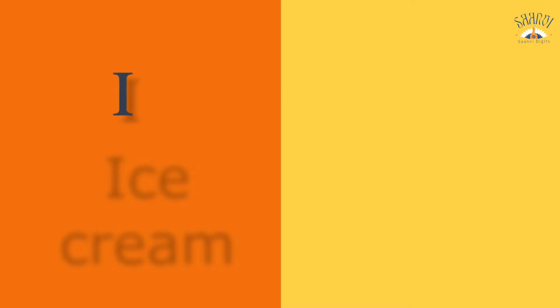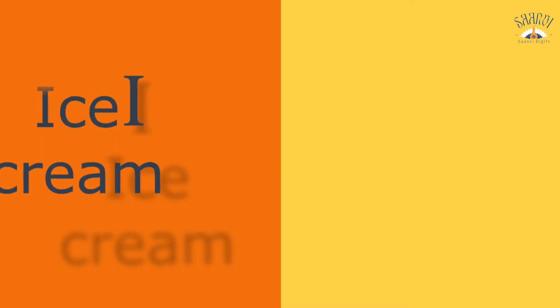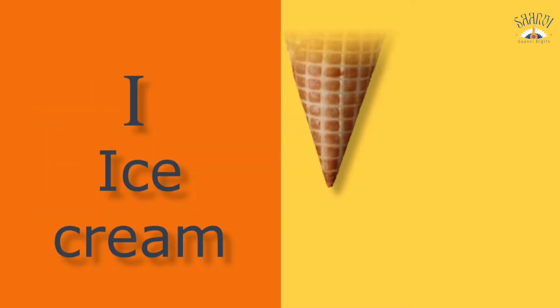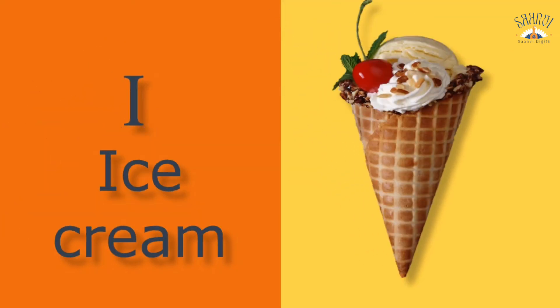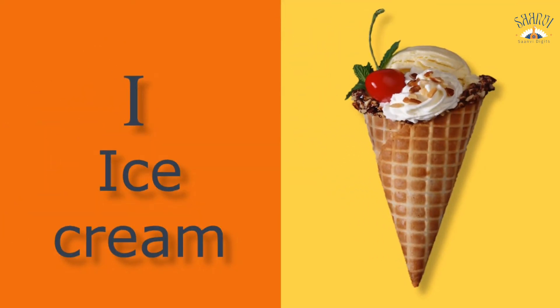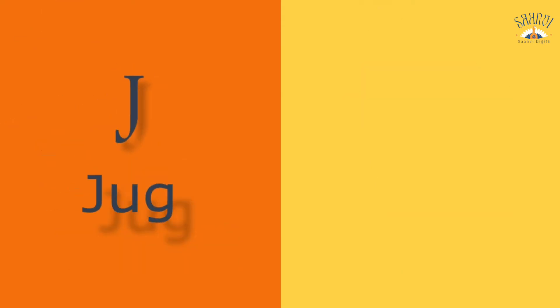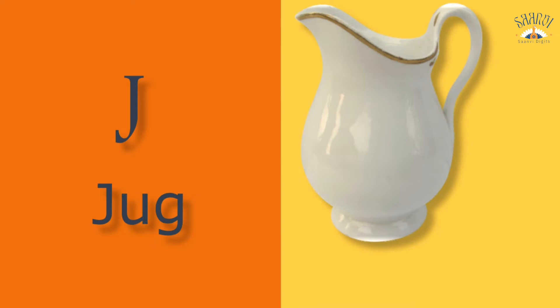I for ice cream. Ice cream means malai barap. J for jug. Jug means jug.